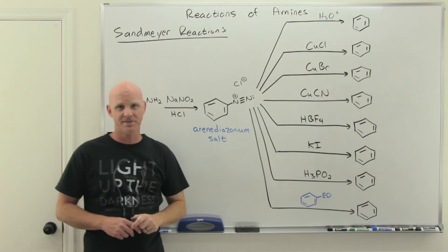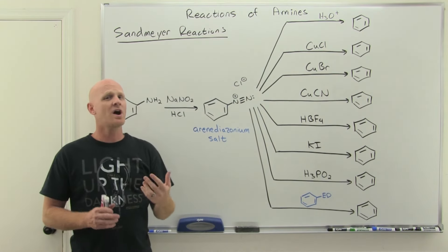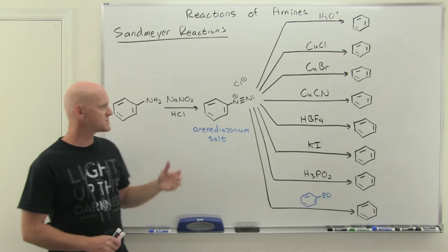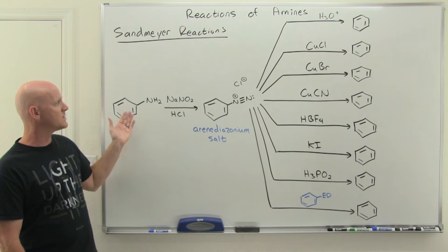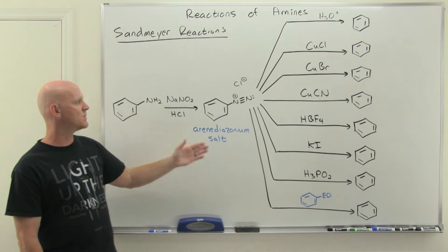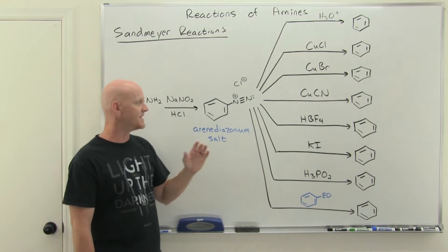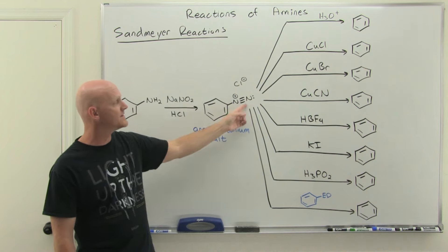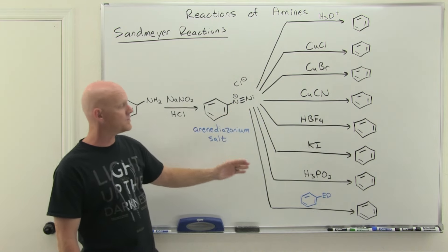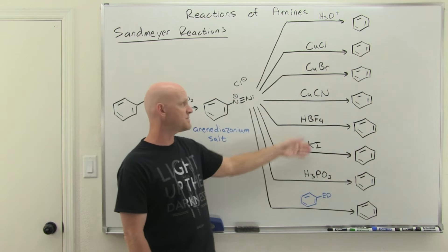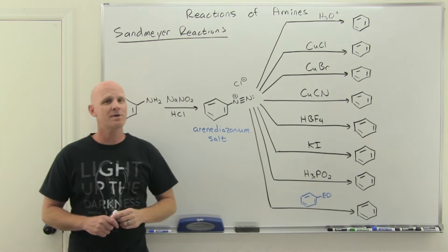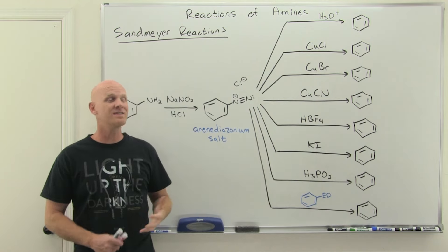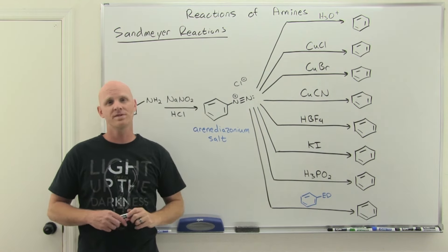The Sandmeyer reaction is the topic of this lesson. Sandmeyer reactions are a collection of reactions most commonly performed starting with aniline. Aniline reacts with nitrous acid to form what's called an arenediazonium salt, and an arenediazonium salt has a good leaving group. We can replace that leaving group with several different possible substituents depending on which reagent we add. For those of you on the hook for these Sandmeyer reactions, it's more memorization than anything. Typically you're not going to be on the hook for the mechanism.